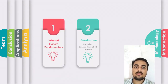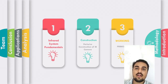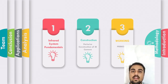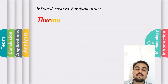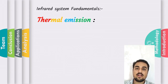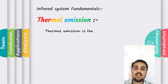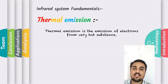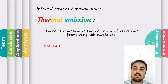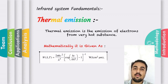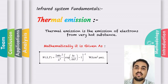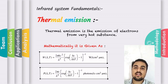Hello, I am Aditya. Today we are going to see the methodology, which is divided into three parts: infrared system fundamentals, construction, and working. For infrared system fundamentals, the first topic is thermal emission. In a thermal imaging camera, to make a measurement of the body using a thermal imager, it is necessary to determine the emissivity of the body. The mathematical expressions of power and wavelength of the emitted body are given accordingly.